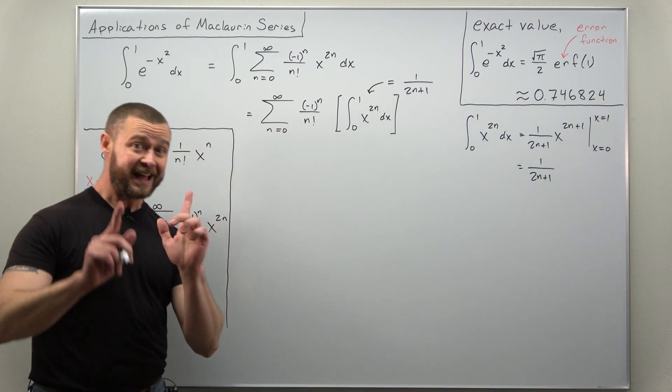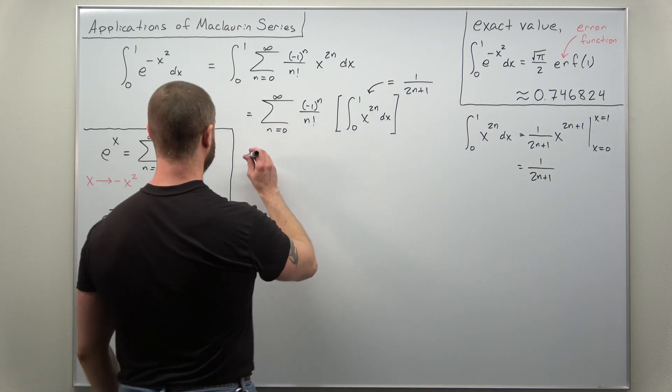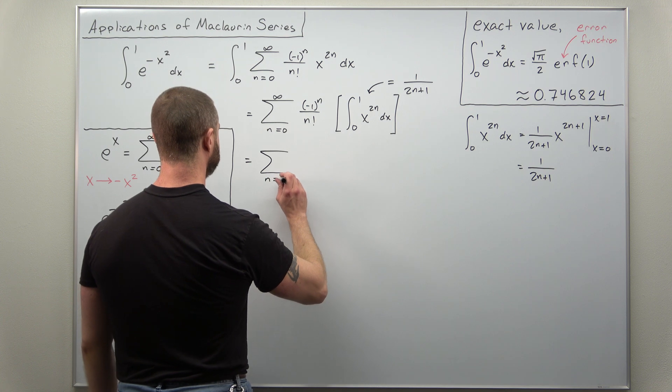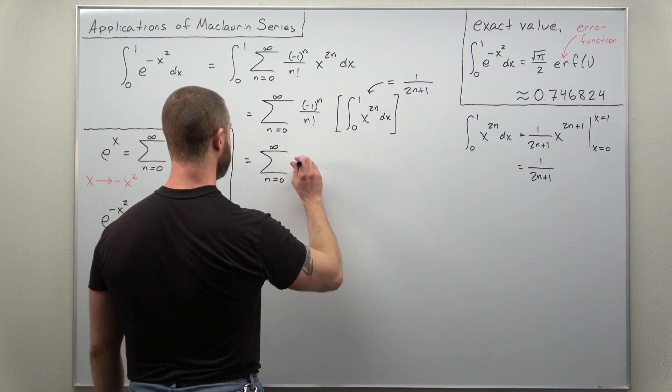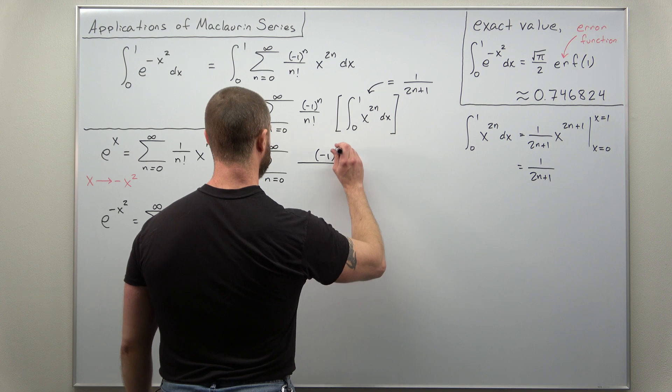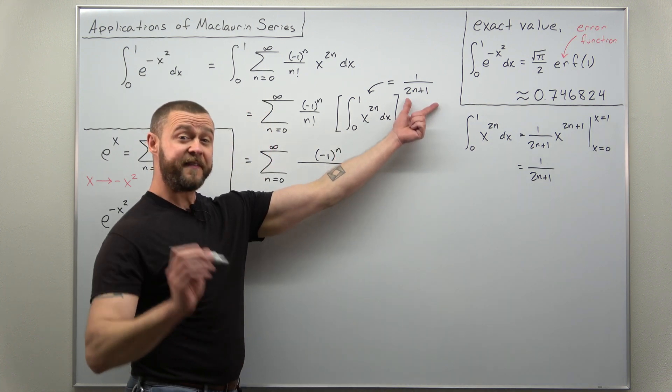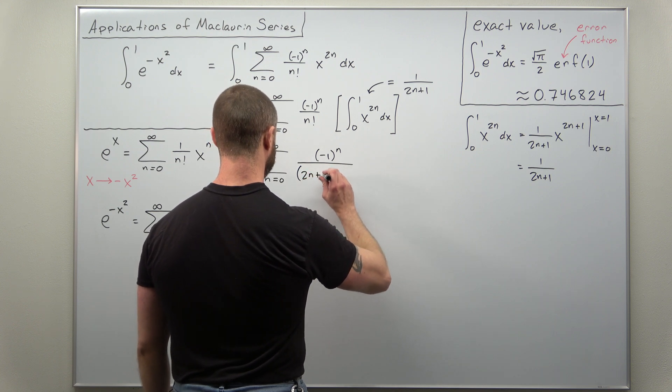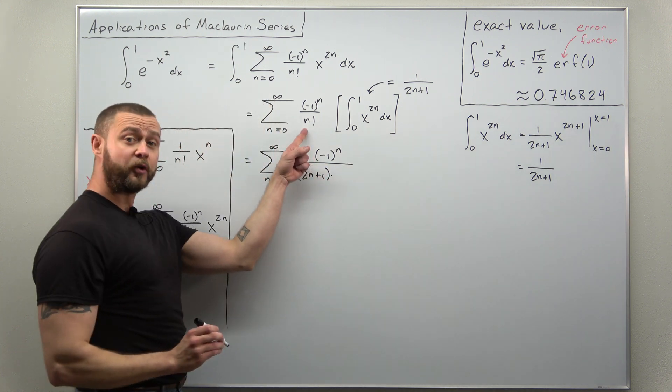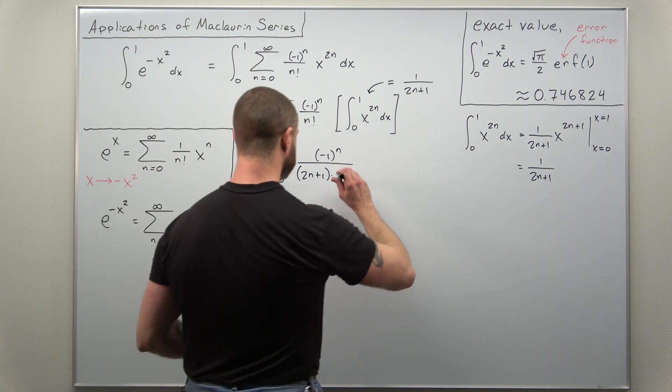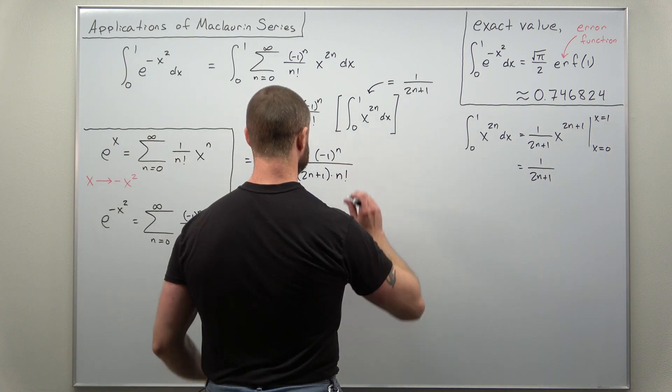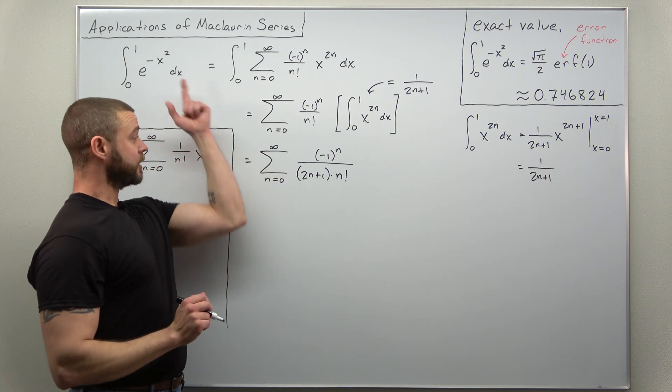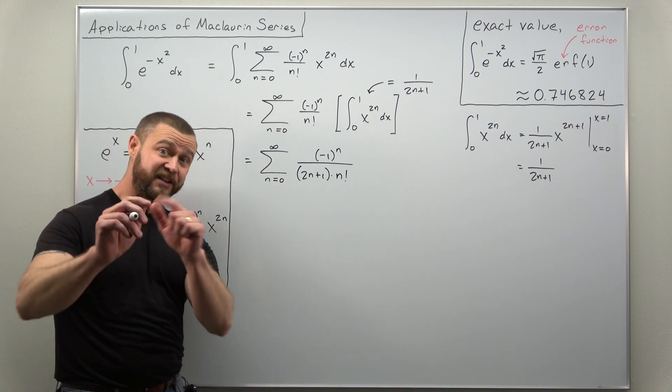And we just go ahead and replace that with the value 1 over 2n plus 1, and we get the value for our integral represented as an infinite series. Our infinite series here is the sum from 0 to infinity of negative 1 to the n. We have a factor of 2n plus 1 in the denominator, and that's multiplying the other factor in the denominator, n factorial. And there we go, this is the exact value for our integral represented as an infinite series.